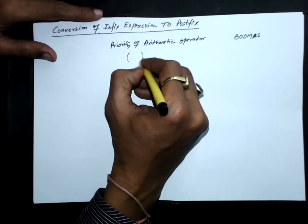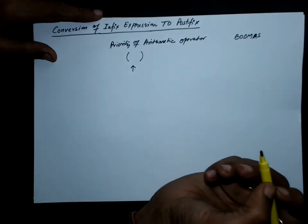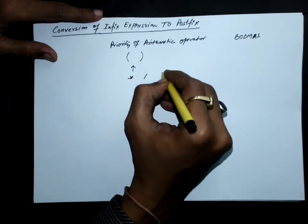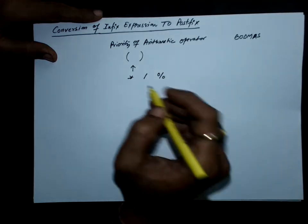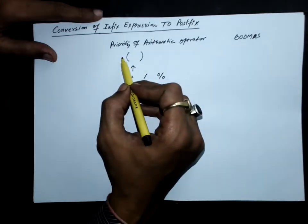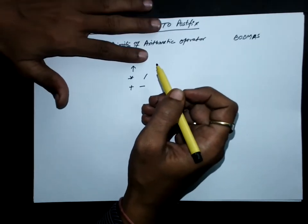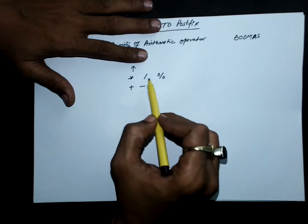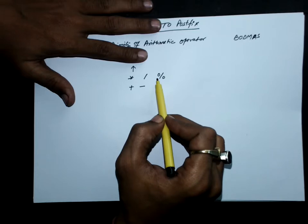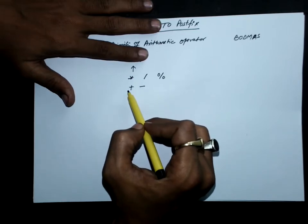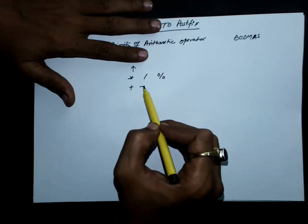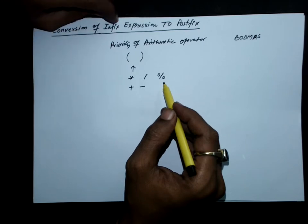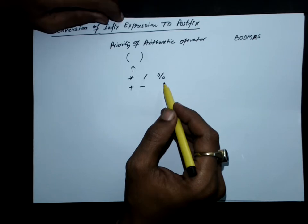So obviously brackets will have the highest priority, and then the exponentiation operator has the next highest priority. Then multiplication, division, and modulus have the same priority. Plus and minus have the same priority but lower than multiplication, division, and modulus. So skipping parentheses, the highest priority operator is exponent, followed by multiplication, division, and modulus — which have the same priority but lower than exponent — and plus and minus have the lowest priority but are equal to each other.